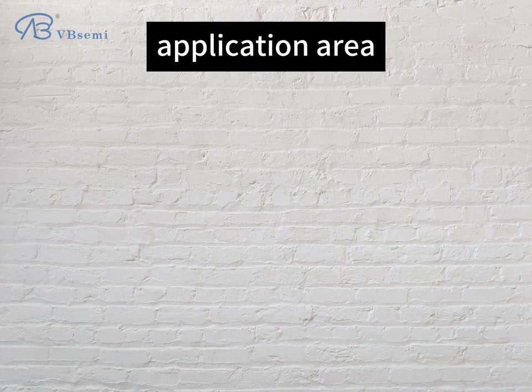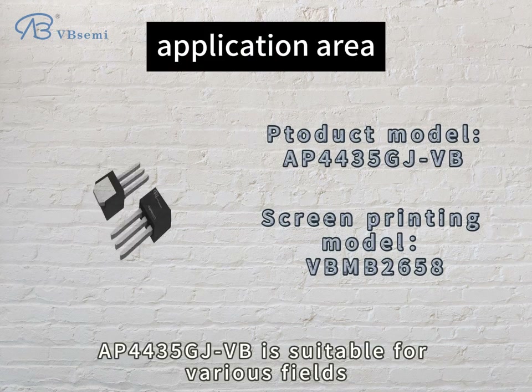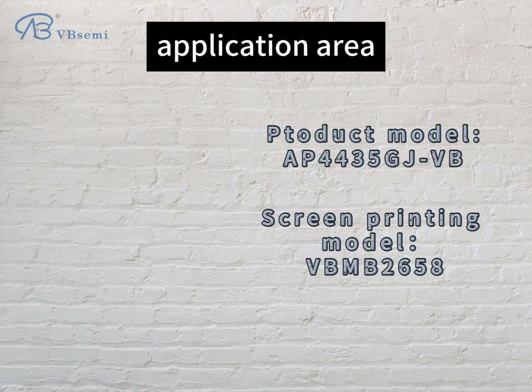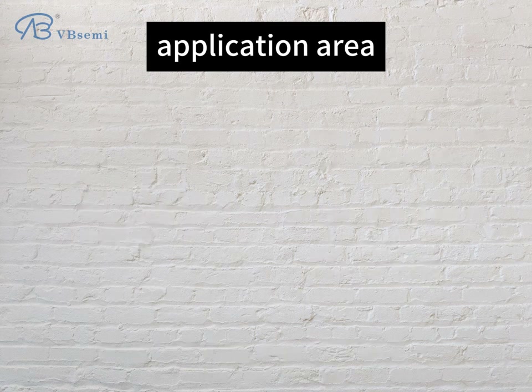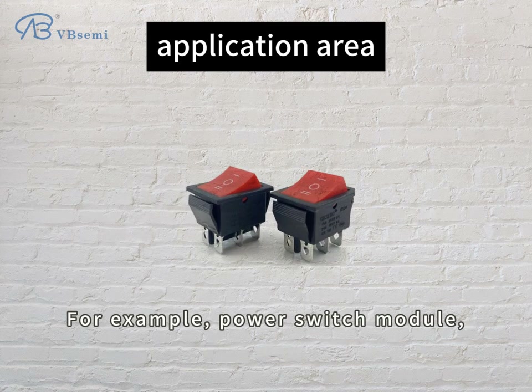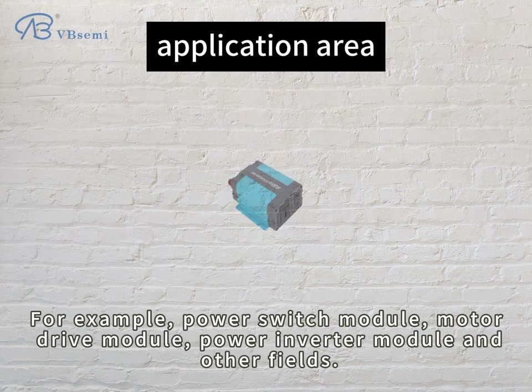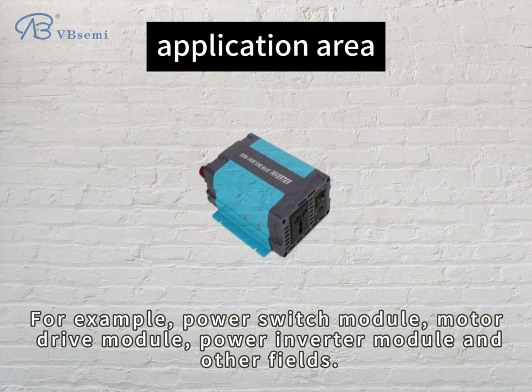Application area: AP4435 GJVB is suitable for various fields, for example, Power Switch Module, Motor Drive Module, Power Inverter Module, and other fields.